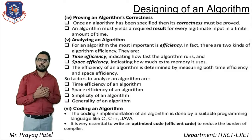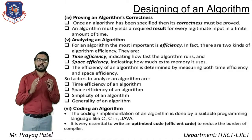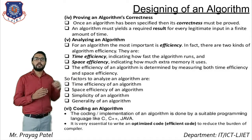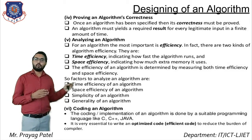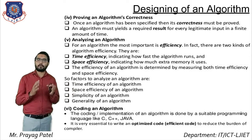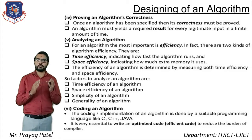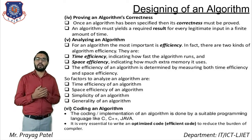Step five is analysis of the algorithm. For analysis we consider time complexity and space complexity. Time complexity is the amount of time required to solve the problem; space complexity is the amount of space required. The four factors considered are: time efficiency, space efficiency, simplicity of algorithm, and generality of algorithm.